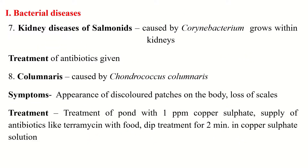The seventh bacterial disease is Kidney Disease of Salmonids, caused by Corynebacterium, which grows within the kidney and destroys it. This bacteria multiplies within fish tissues, growing slowly within the kidneys and causing chronic damage. The treatment of antibiotics is given and has been found to work successfully against Kidney Disease of Salmonids.